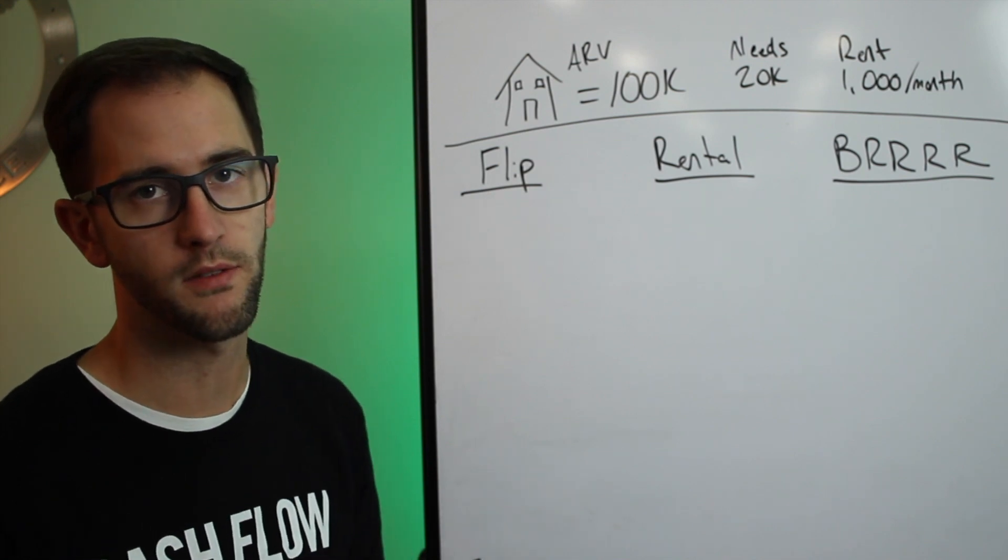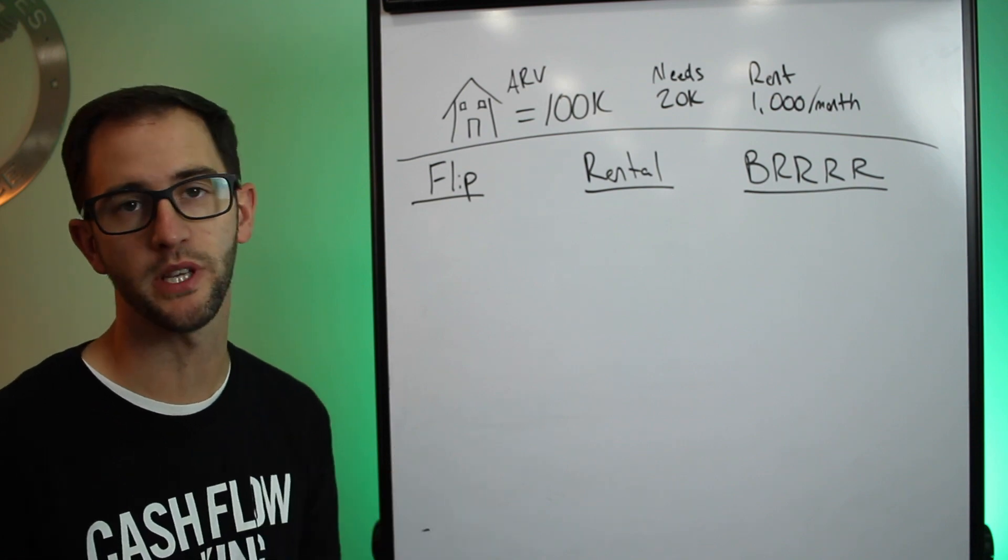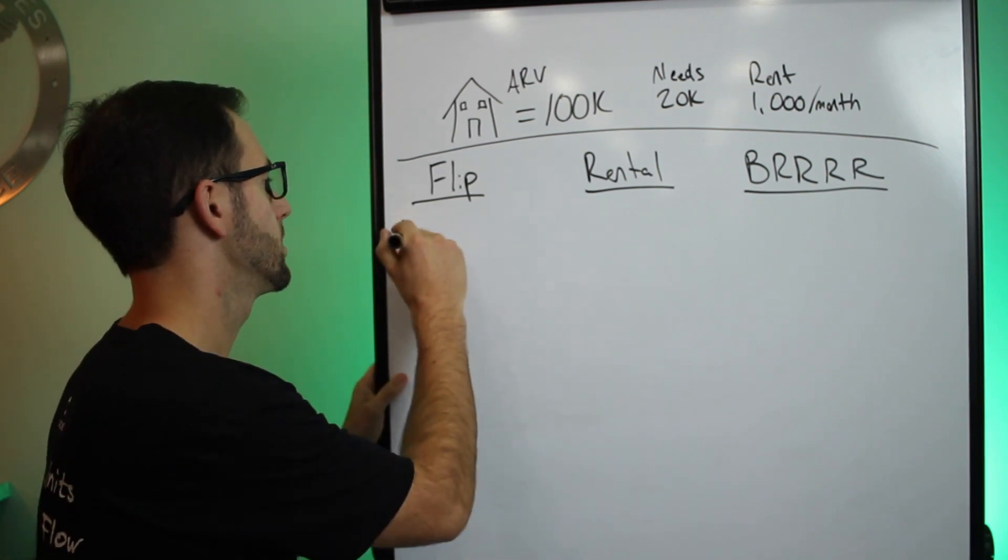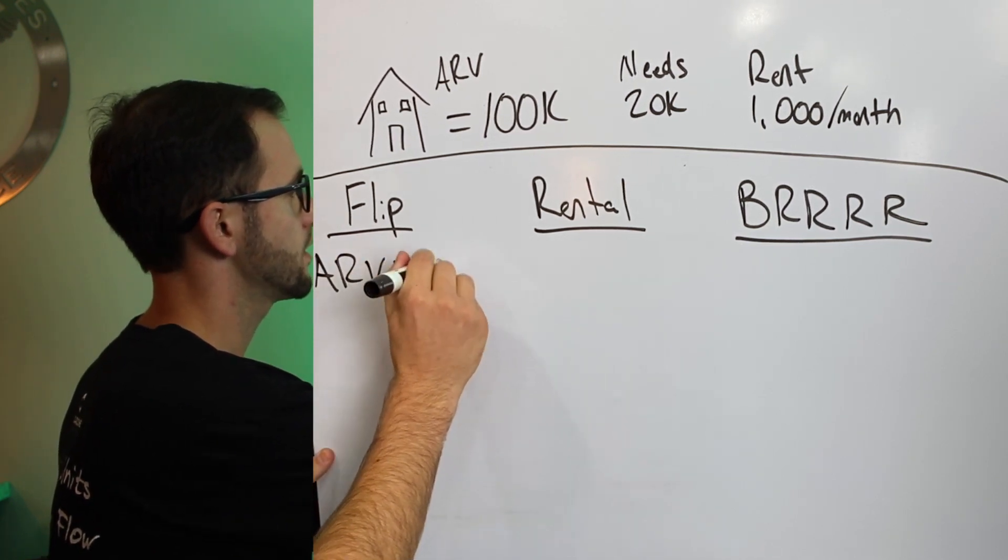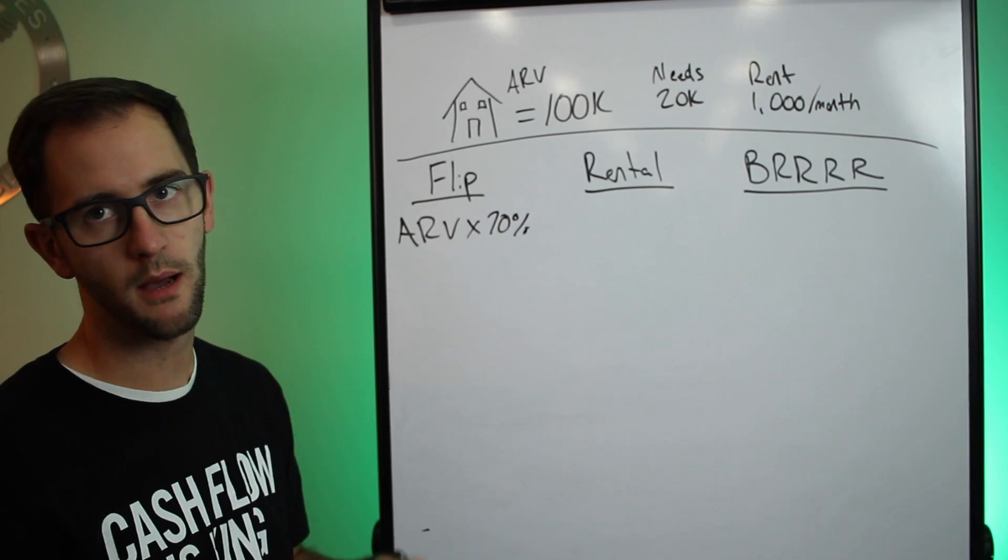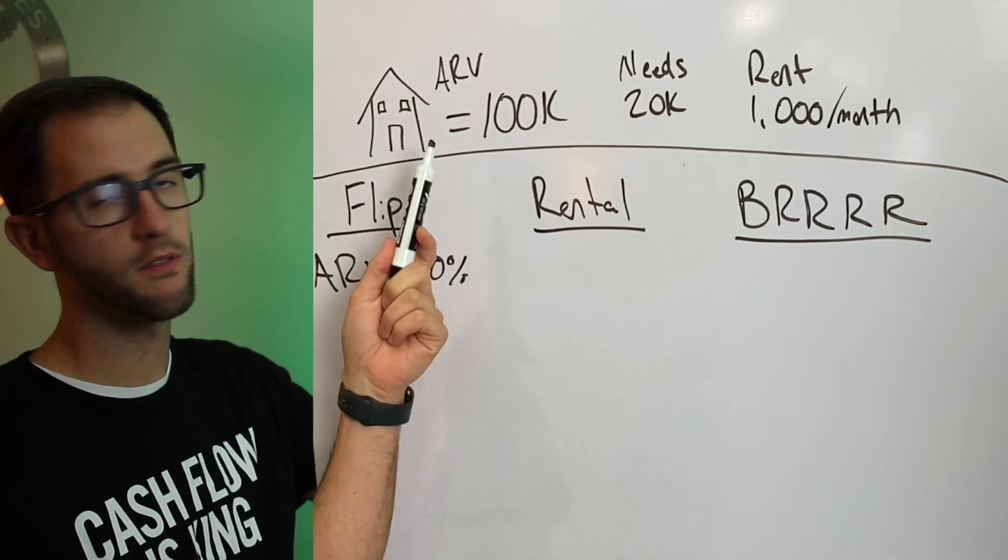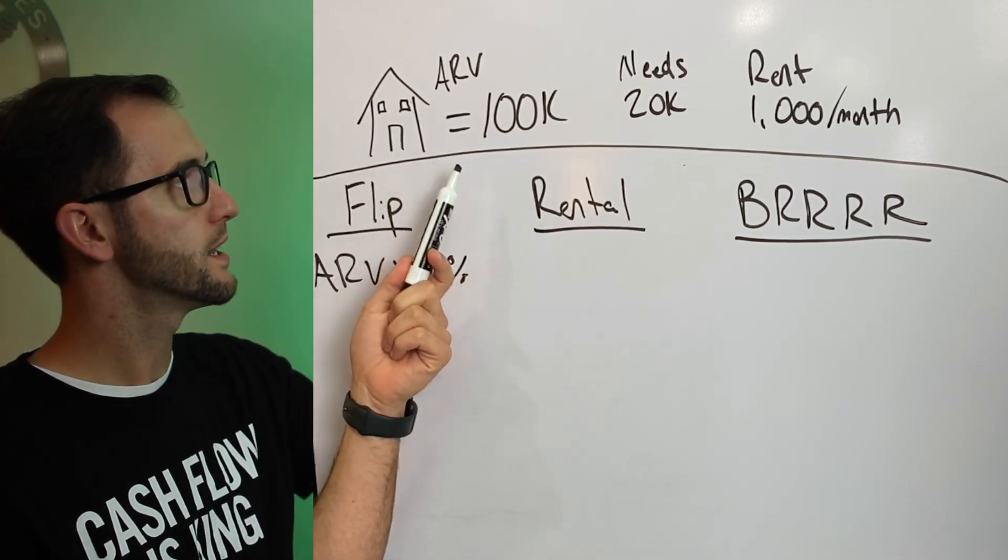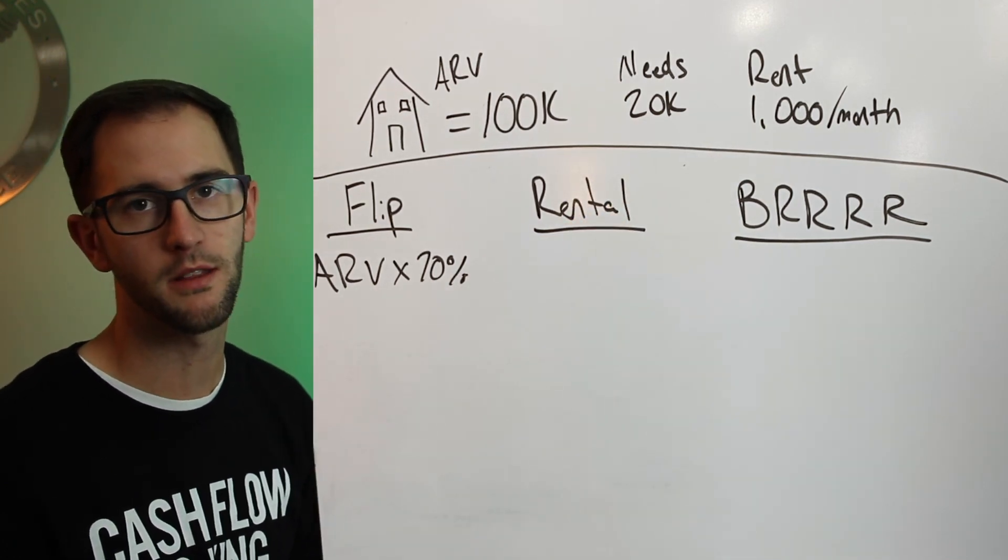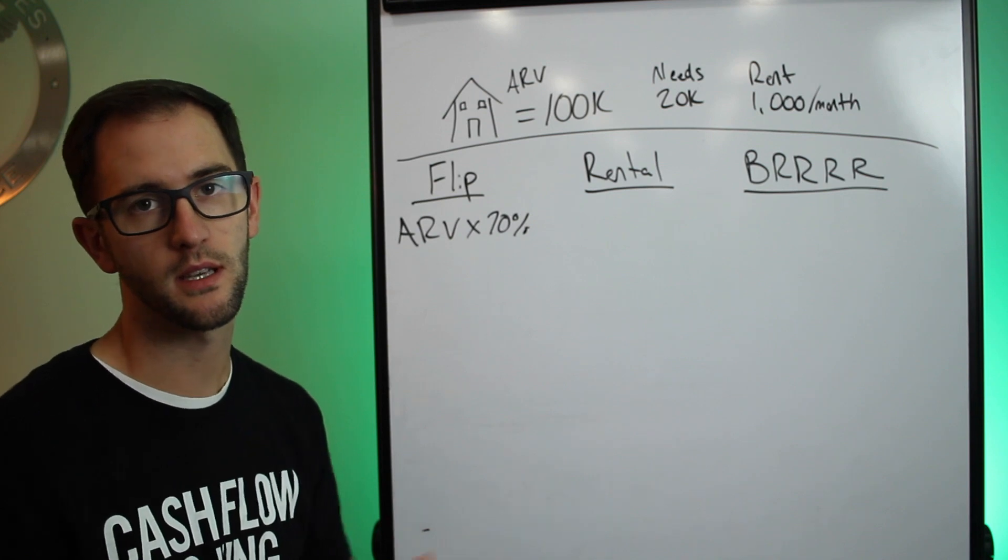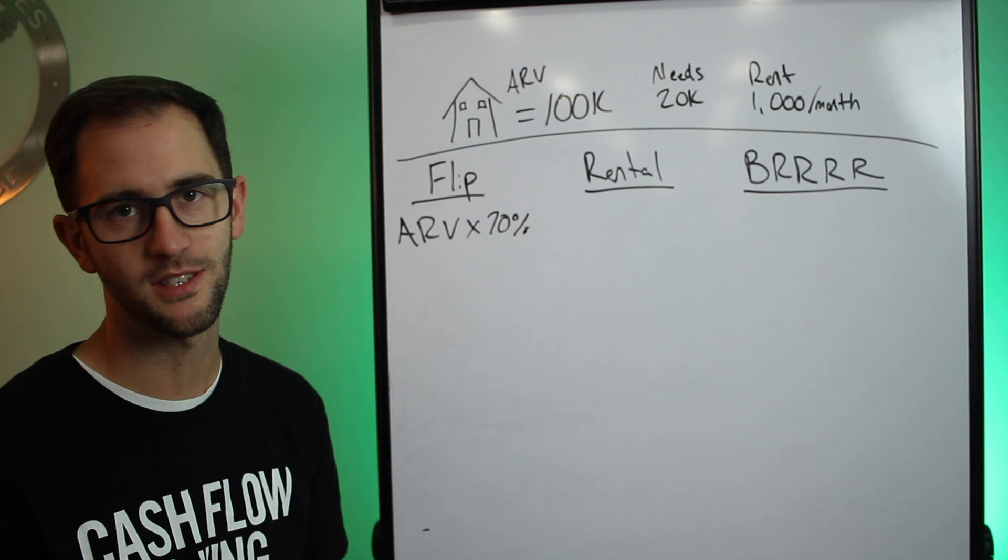So let's first start out with the flip. When flipping, we're going to start off with the typical ARV times 70%, otherwise known as the 70% rule. I'm going to be using a hypothetical house here for numbers sake. We're going to call it the ARV on this house is going to be $100,000. It's going to need $20,000 in rehab, and at the end of the day, it's going to rent $1,000 a month. All very simple numbers, but very realistic. I think you guys know my math gets worse when I'm on camera, so I did this to help myself out.